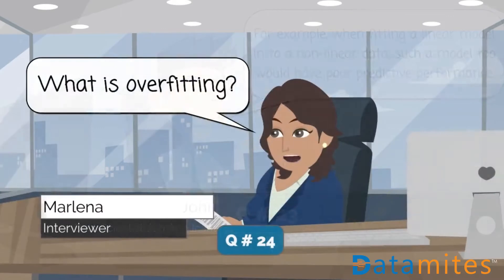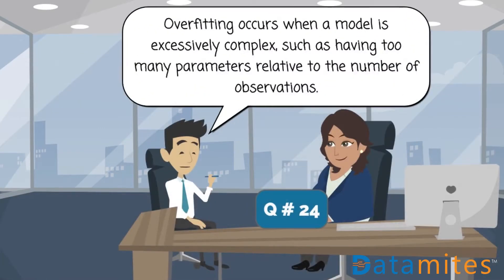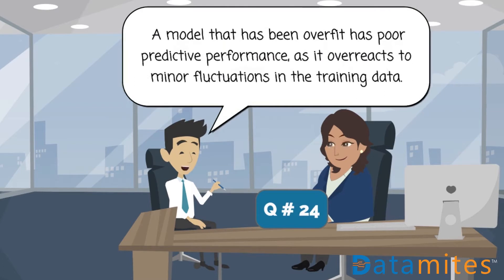What is overfitting? Overfitting occurs when a model is excessively complex, such as having too many parameters relative to the number of observations. A model that has been overfit has poor predictive performance, as it overreacts to minor fluctuations in the training data.